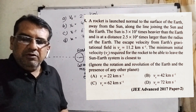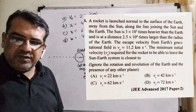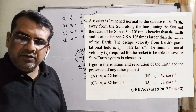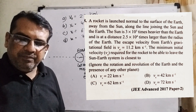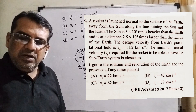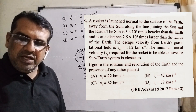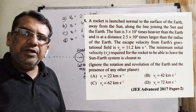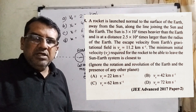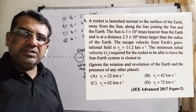You are given four options. Option A: Vs = 22 km/s. Option B: Vs = 42 km/s. Option C: 62 km/s. And Option D: Vs = 72 km/s. This question was asked in JEE 2017, Paper 2.